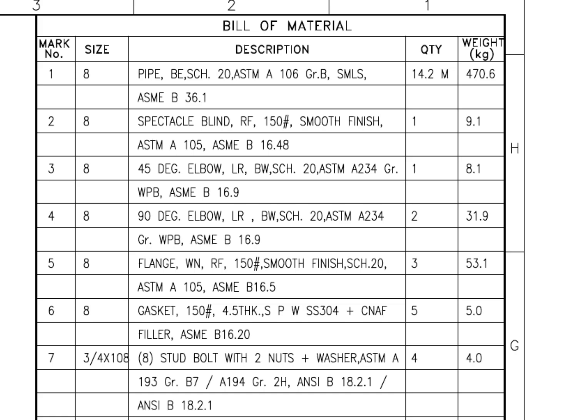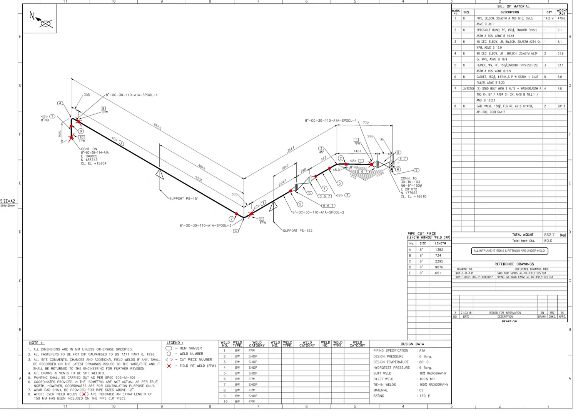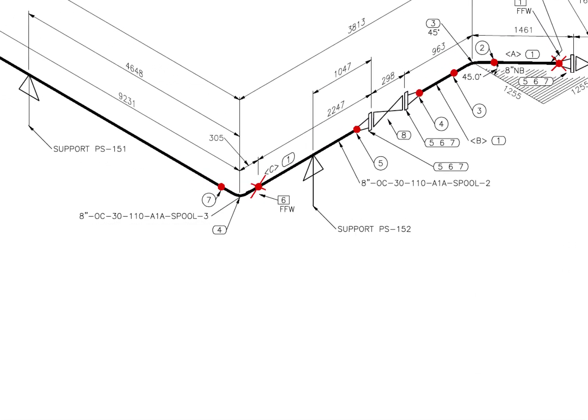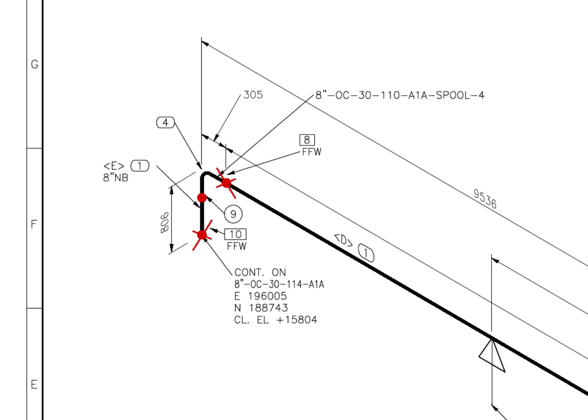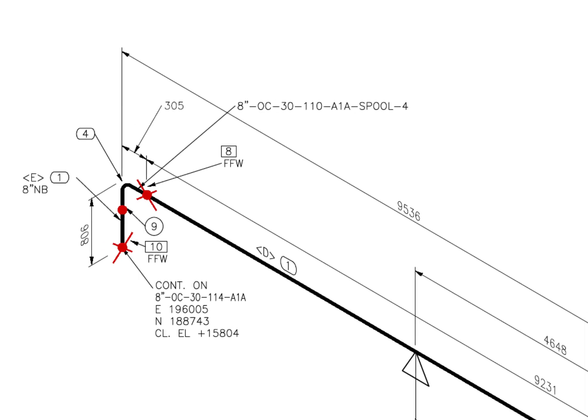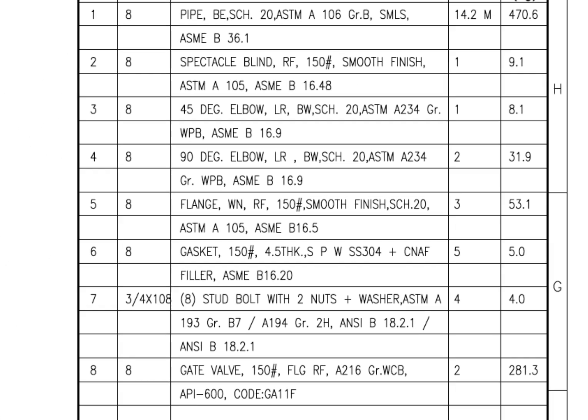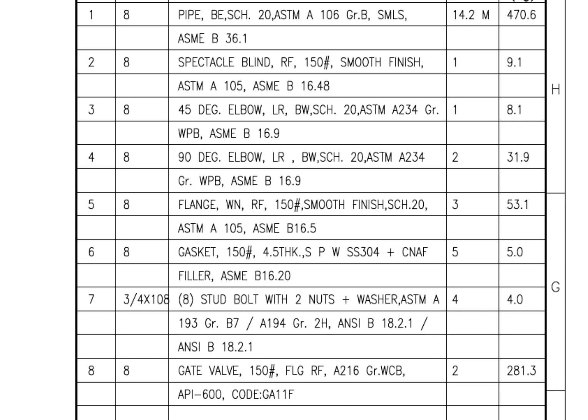Let us check what are the adjacent fittings. Item number 4, look for what is on the other end. Both are the same item. Let us check the material list: 90 degree elbow, long radius, butt weld, schedule 20, and the size is 8 inch.